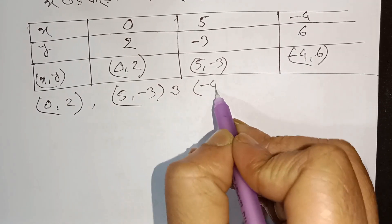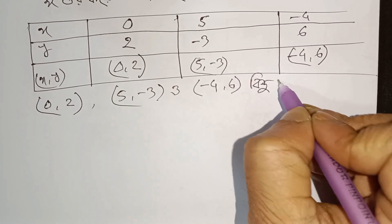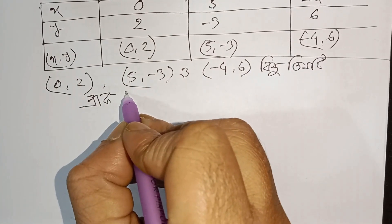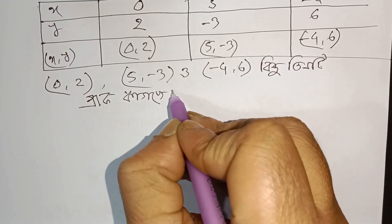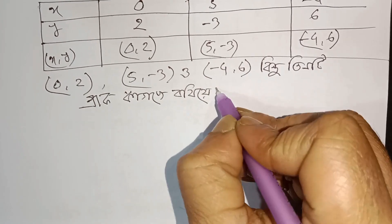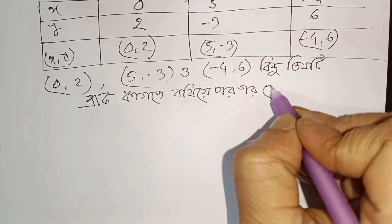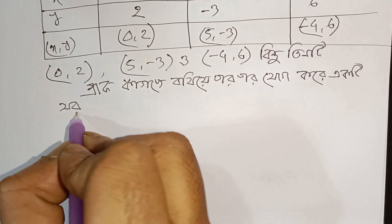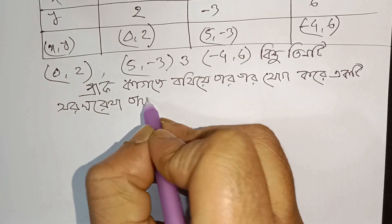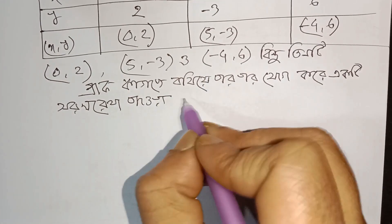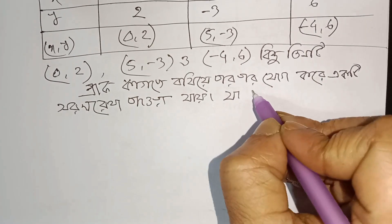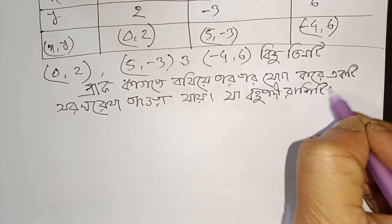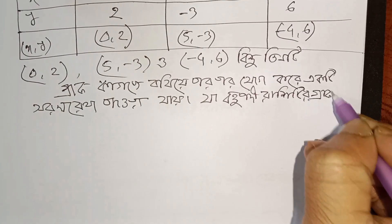Minus 4, 6, 23 — t graph on paper (kaghoje boshie), graph on paper, side by side (par par jokkore), on paper side by side (jokkore), straight line (sarol rekha), power, polynomial (bohupodi) — drawing the graph on paper.